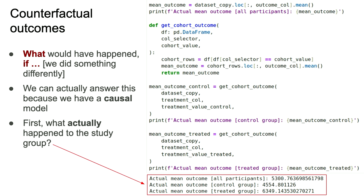There's one extra bit I wanted to add to this talk: counterfactual outcomes. A counterfactual outcome is like looking back and saying, what would have happened if things were different — if we did something differently? The great thing about having a causal model is we can actually answer this. We can first look at what actually did happen to the participants in this study. The average outcome of all participants was $5,300 average wage in 1978. Looking at the control group who didn't receive the training, the average wage is $4,500. And the average outcome for the treated group who did receive the training is $6,300. At surface level, there was an increase in wage for that group, which matches our causal effect that doing the training did increase wages.